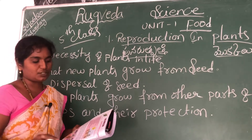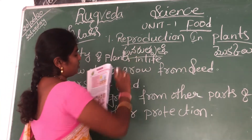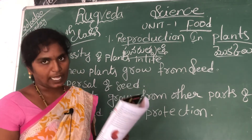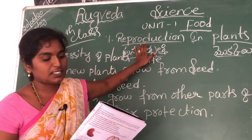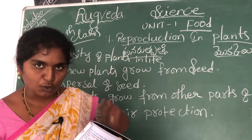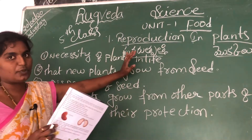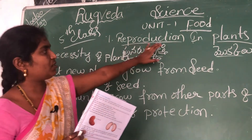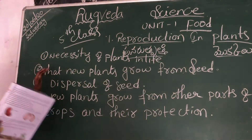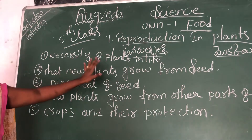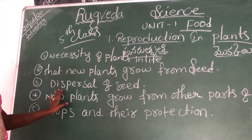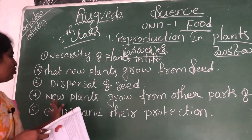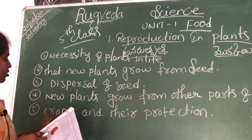What is reproduction? Reproduction is the process by which plants can generate a new plant. In this chapter, we mainly need to know about: necessity of plants in our life, new plants grow from seed, dispersal of seeds — which has four types — new plants grow from other parts of the plant, and crops and their production.